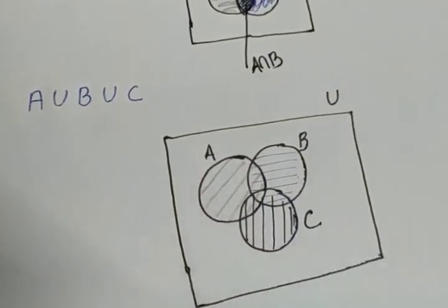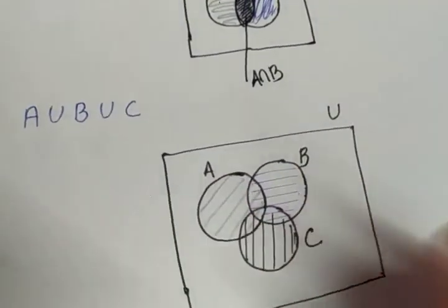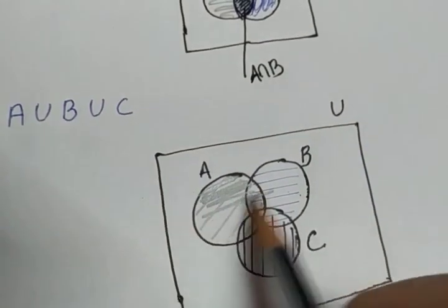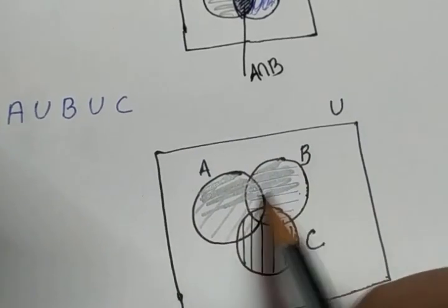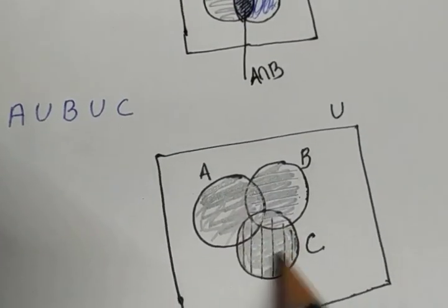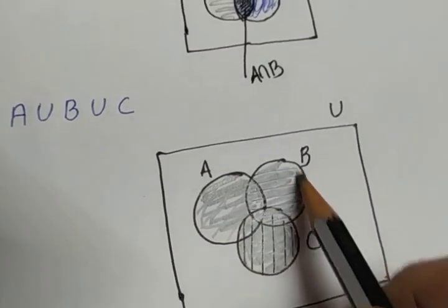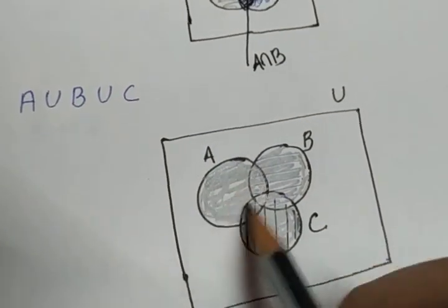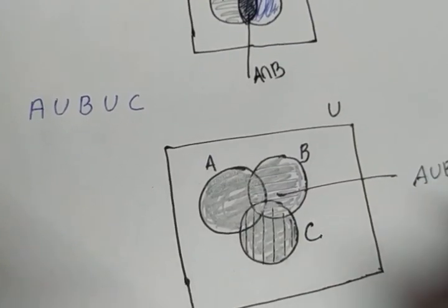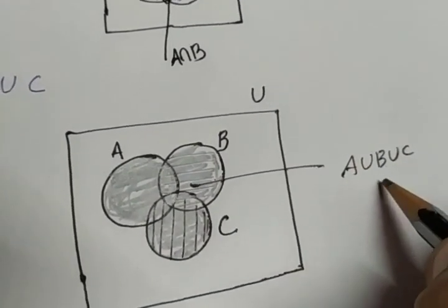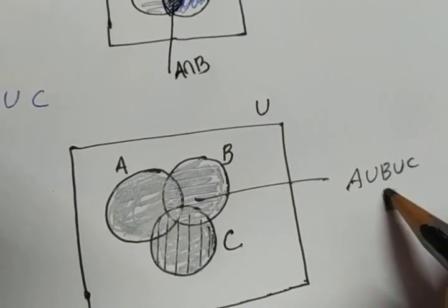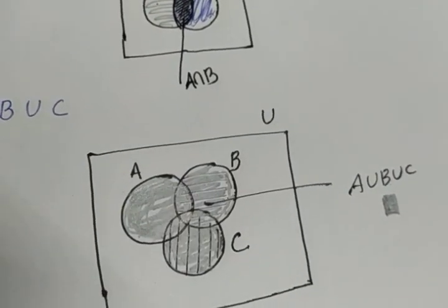The completely shaded region represents A union B union C. If you want to represent this in a Venn diagram for the exam, shade A, shade B, and also shade C completely — that gives you A union B union C. The pencil shaded region covering all three sets is A union B union C. To make it more clear, shade it like a box pattern as used in graph shading.